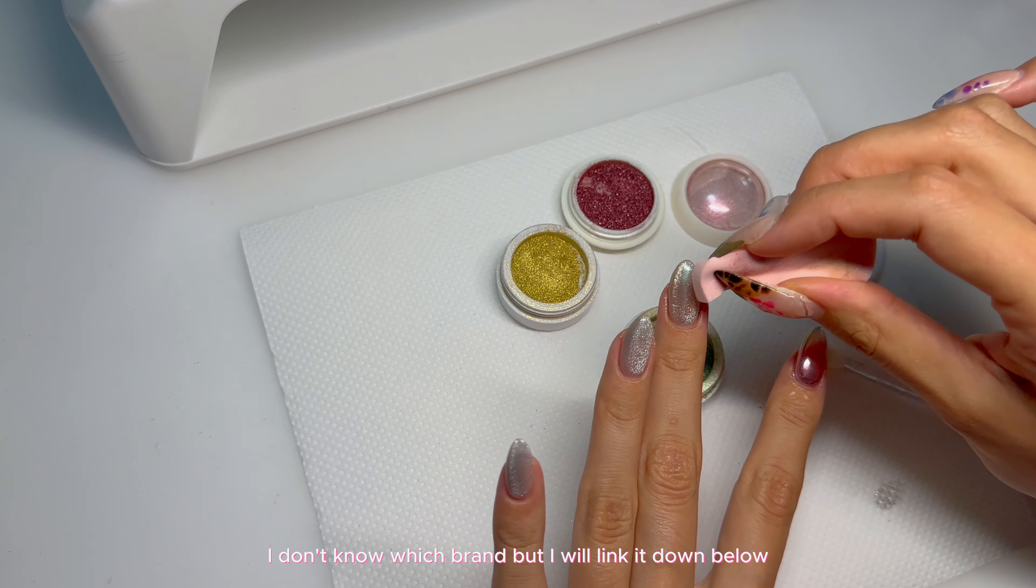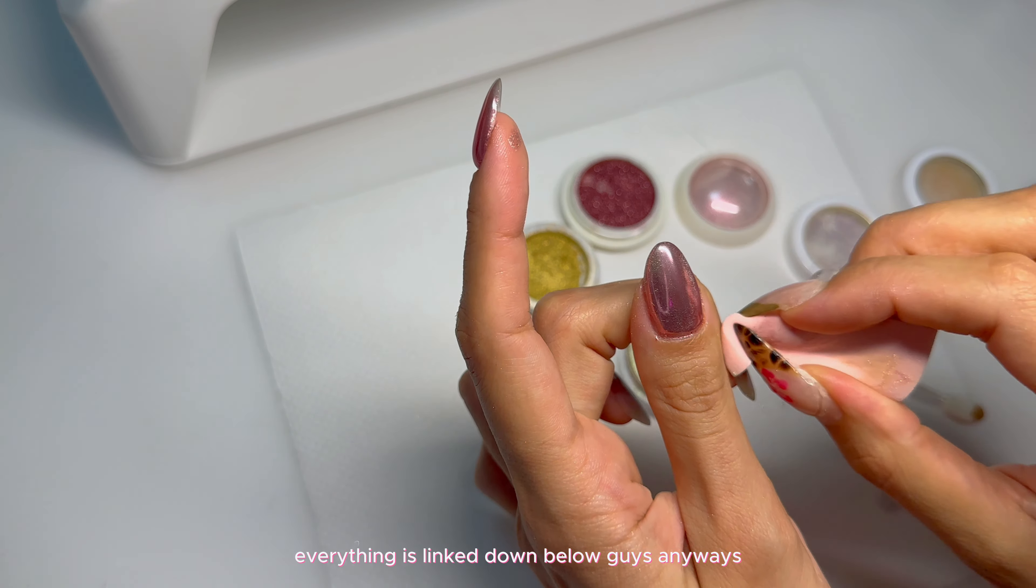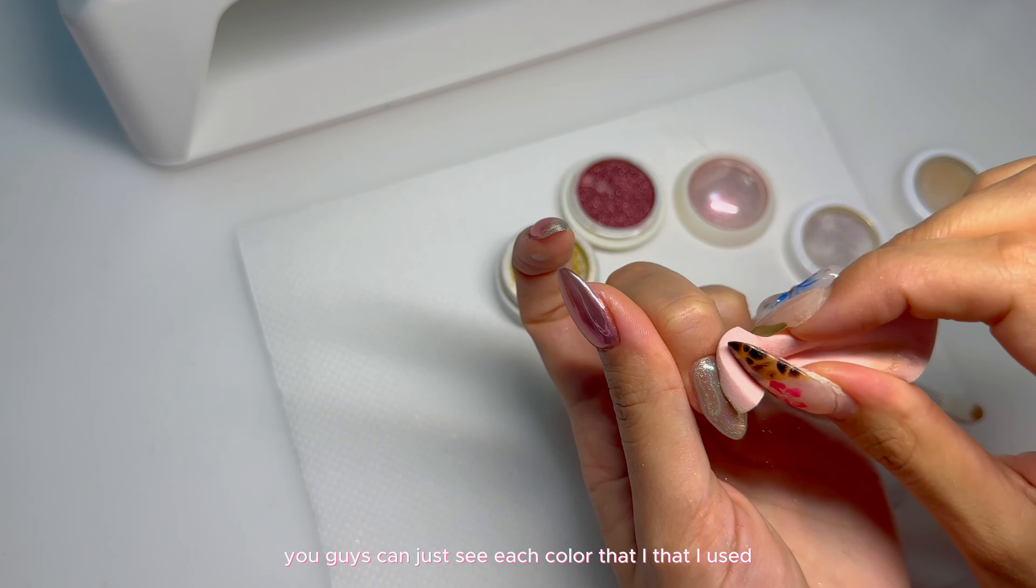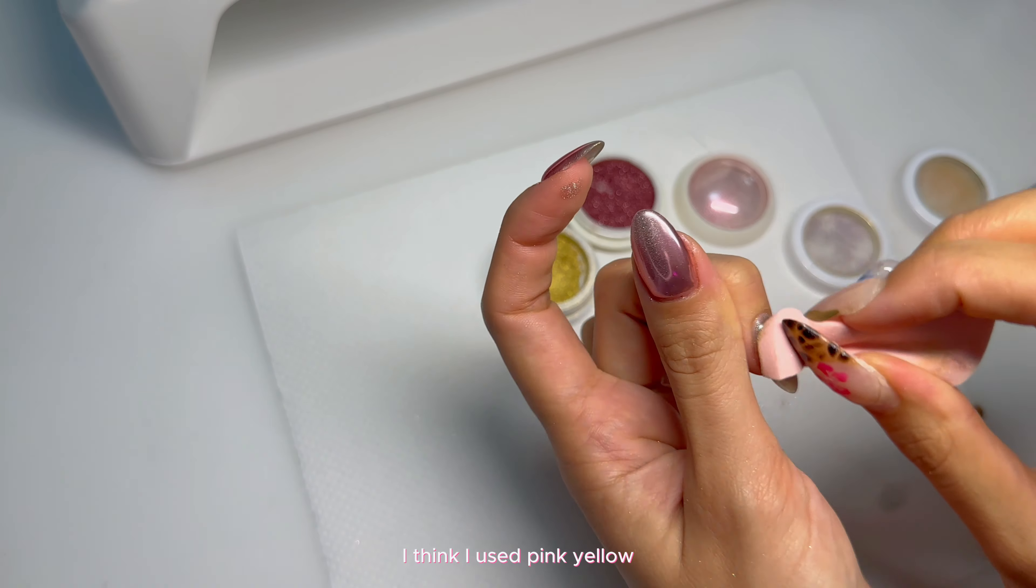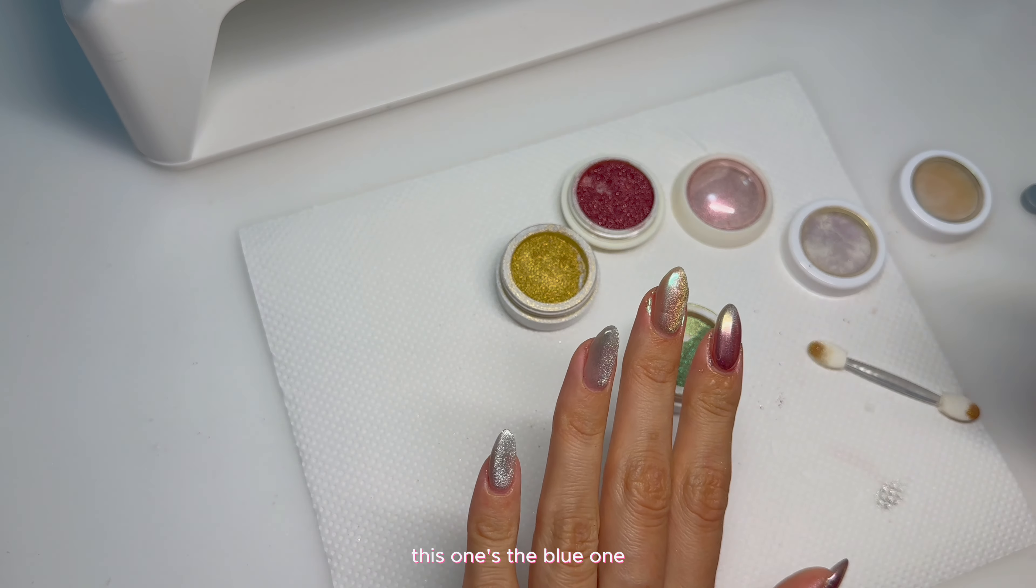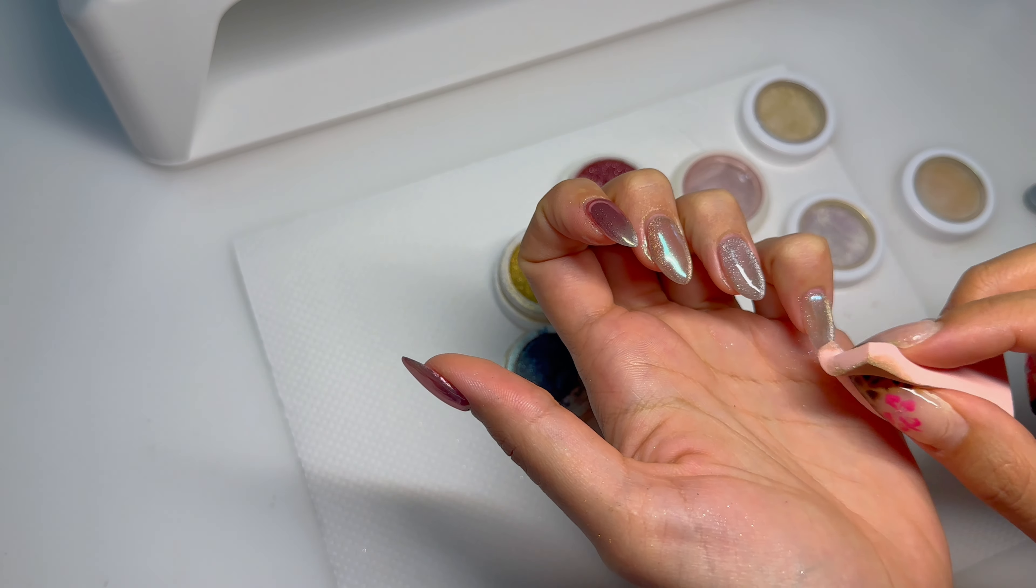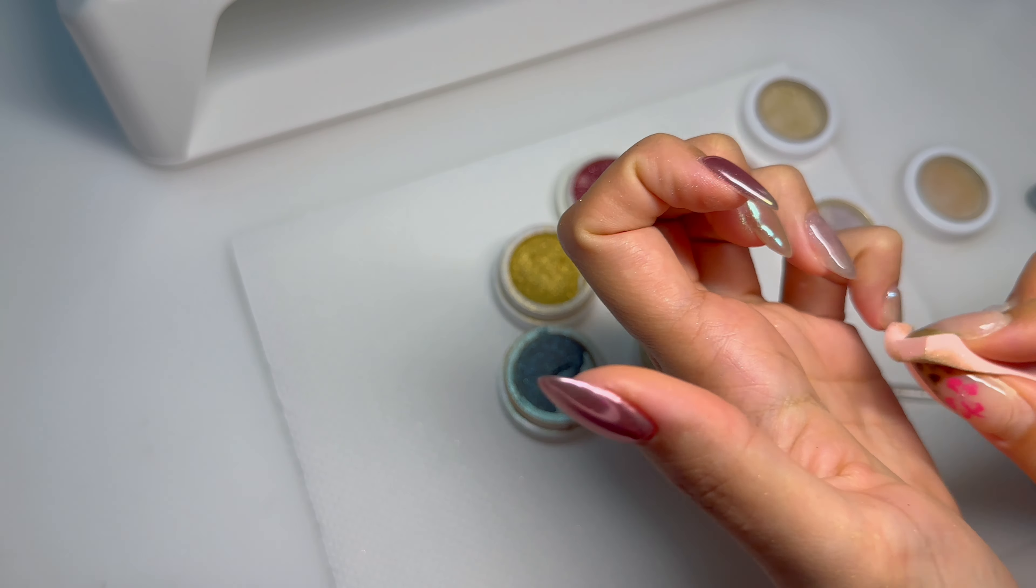For the middle finger, I'm using this green chrome that I have. I don't know which brand, but I will link it down below. Everything is linked down below, guys. You guys can just see each color that I used. I think I used pink, yellow, green, blue. This one's the blue one. And then I used regular glaze chrome on my ring finger.